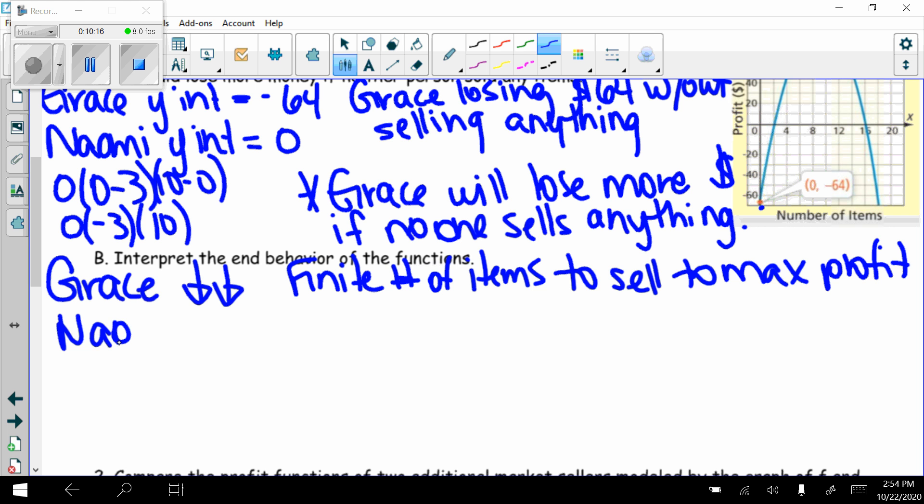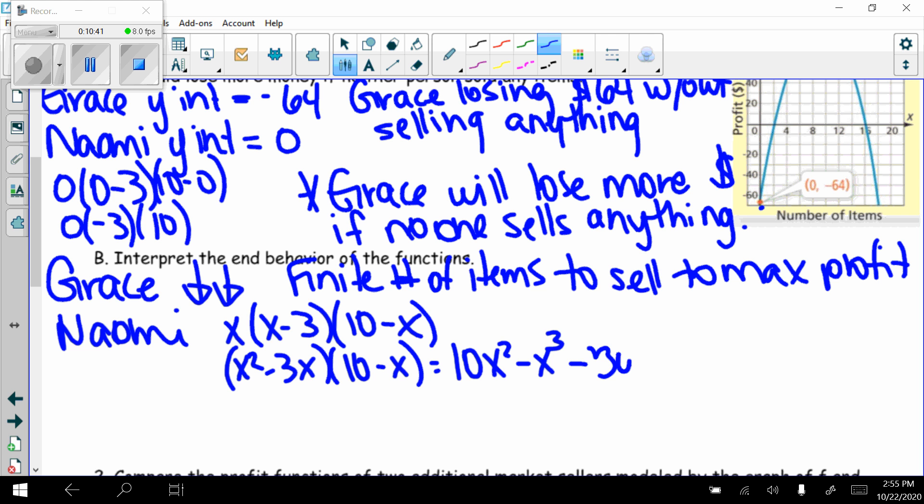If we look at Naomi, I don't know what her end behavior is. I don't have it graphed. But I know that it's x(x - 3)(10 - x). If I multiply all of this out, here I get x² - 3x. I'll multiply that by 10 - x. And so then I've got 10x² - x³ - 30x plus 3x². I put that in standard form. I get negative x³ + 13x² - 30x.